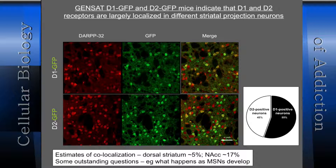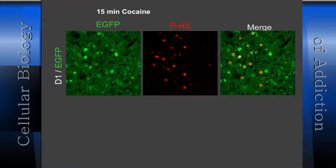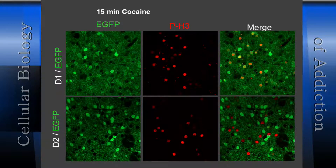We need the right tools to interrogate the overlapping population because if you manipulate just D1 or D2 cells you're probably not going to get at it. Looking at the response of histone H3 to cocaine in whole animals, it's only in D1 cells — not in D2 cells — and there's a lot of data like this showing that the vast majority of D1 and D2 are segregated.